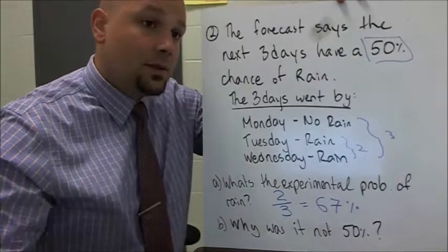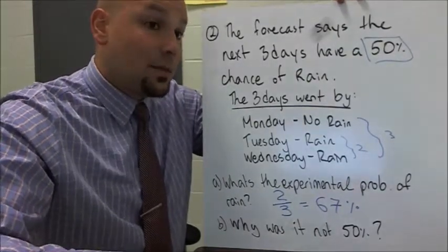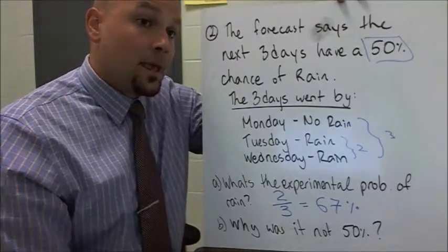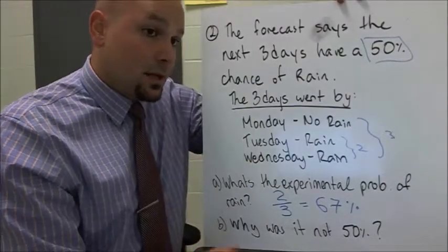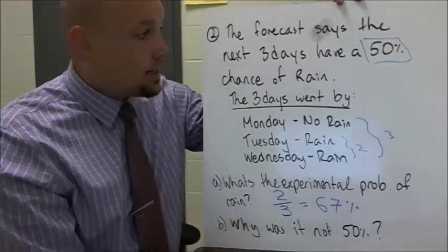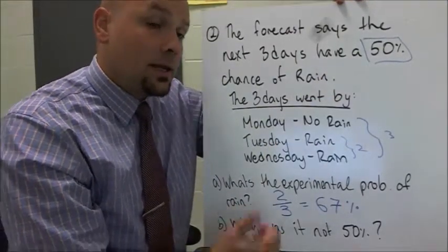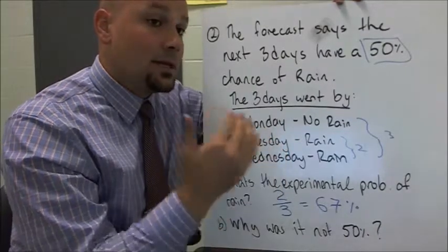Well, again, they use equipment that allow them to predict based on what's happened in the past. So it's based on experimental probability. And remember, we said that experimental probability is always an estimate. So why is it not 50 percent? It's because his was based on experimental probability. And experimental probability is always an estimate. It's never going to be exact.